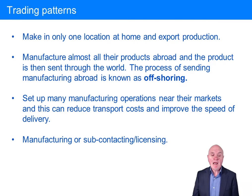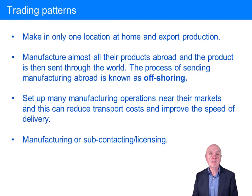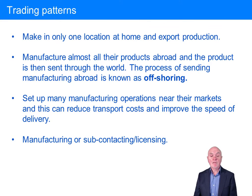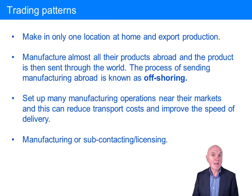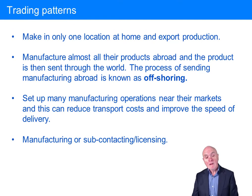The various trading patterns you can have: you can make in only one location at home and export production. The example in the notes is Boeing — Boeing only makes aircraft in the United States and exports them everywhere. You can manufacture almost all your products abroad — for example, Apple designs its products in the United States but essentially they are manufactured or assembled in the Far East, principally to get cost advantages through labour and the infrastructure available there.